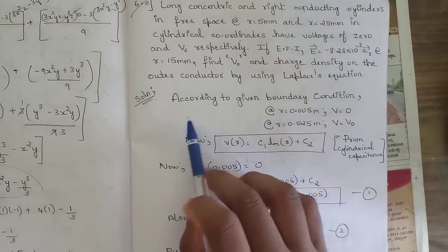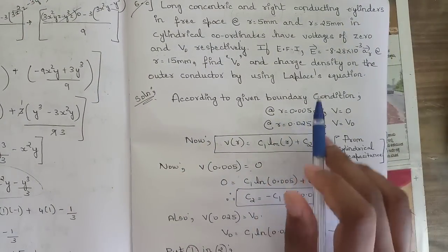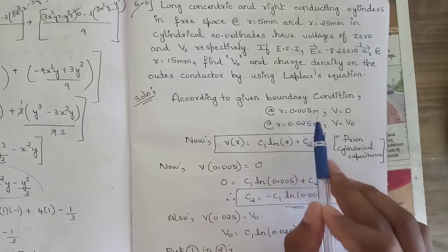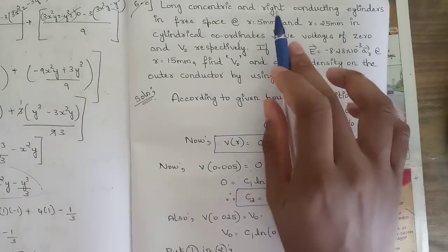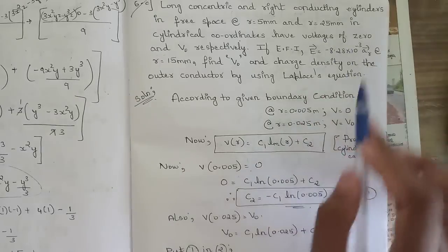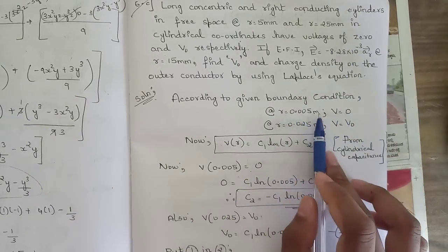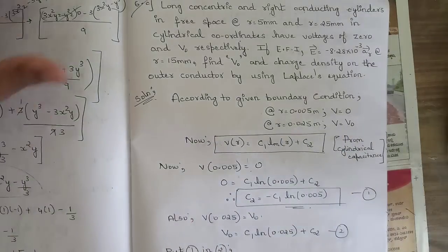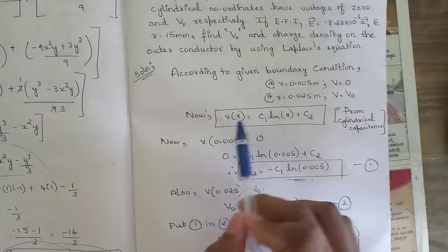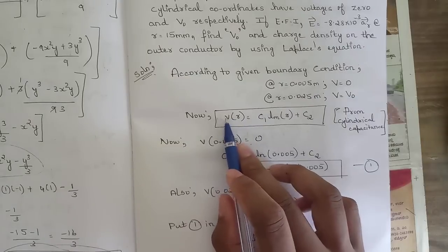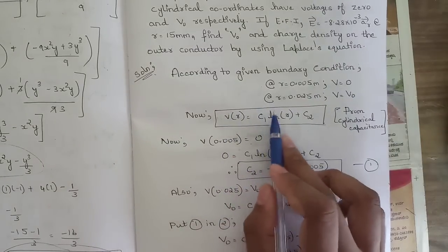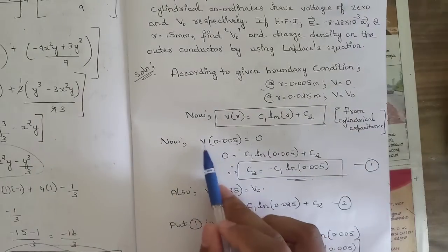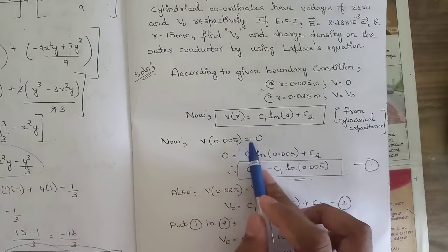According to the given boundary conditions, represent r in meters. At r = 0.005 m, V = 0. At r = 0.025 m, V = V₀. From cylindrical capacitance, applying boundary conditions gives: V(r) = C₁ ln(r) + C₂. Applying the first condition: V(0.005) = 0.